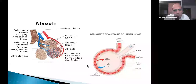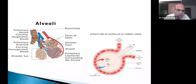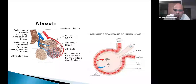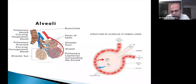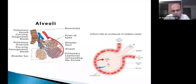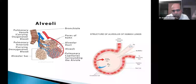It is important to understand how blood travels from the right ventricle to the pulmonary artery and then distributes to the alveolar sac level. At this level, gas exchange happens — blood gets oxygenated and CO2 diffuses out. Always keep in mind how blood flows from the right ventricle to the alveolar sac and how gas exchange occurs there.